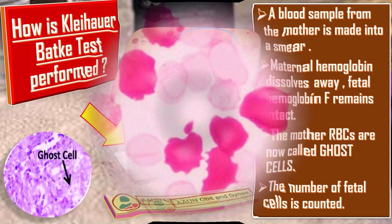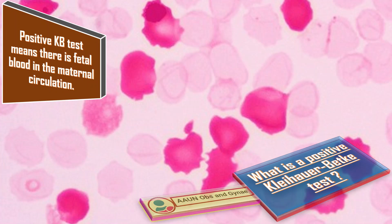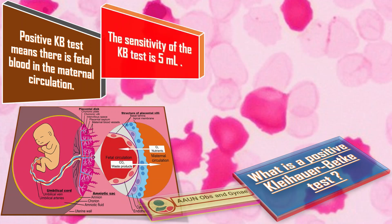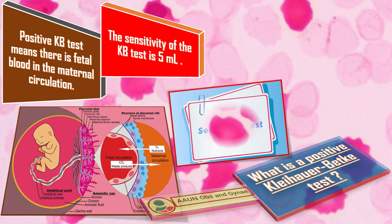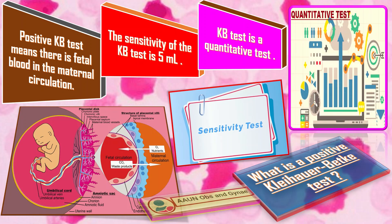A positive Kleihauer-Betke test means there is fetal blood in the maternal circulation. The sensitivity of the Kleihauer-Betke test is 5 ml, meaning a fetal hemorrhage of less than 5 ml between the fetus and the pregnant individual's circulation may not be detected with this method. Because the Kleihauer-Betke test is a quantitative test, results are often reported as the total amount of fetal blood in the maternal circulation rather than simply as positive or negative.